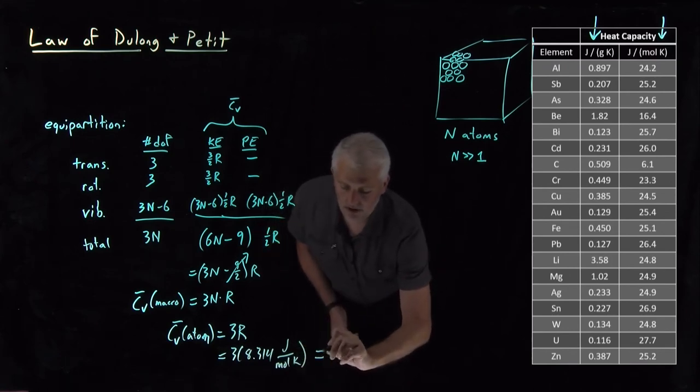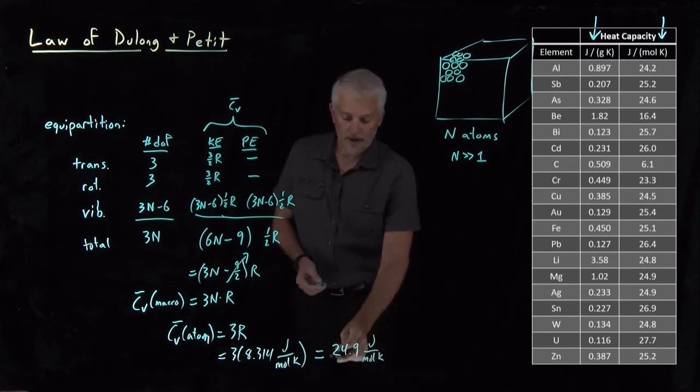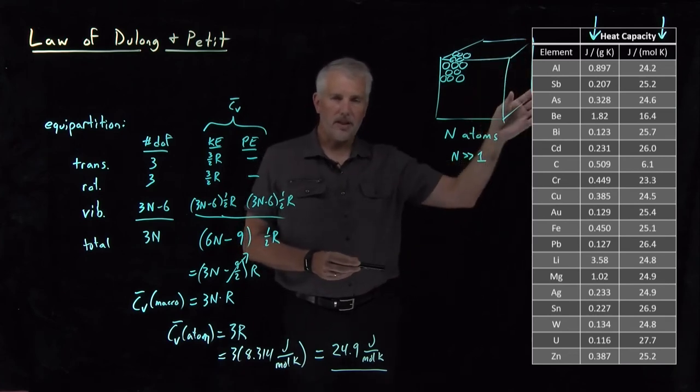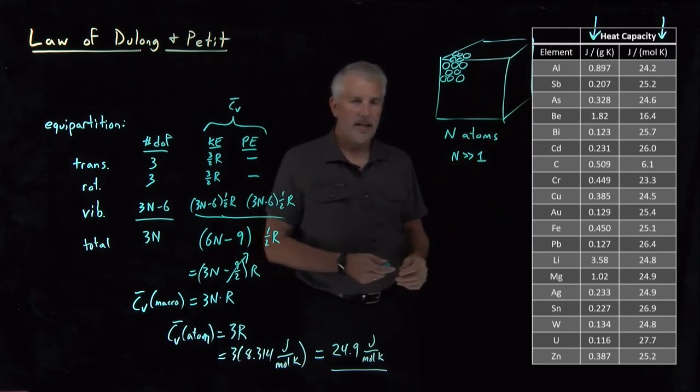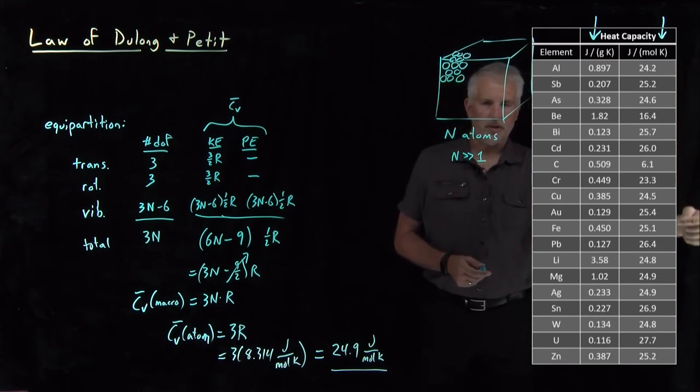So that's going to work out to 24.9 joules per mole Kelvin. And that value we see is exactly the value predicted in this table for, not exactly the same value, but roughly the right value for most of the entries in this table.